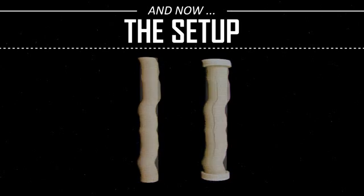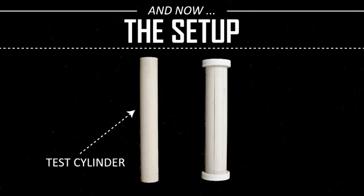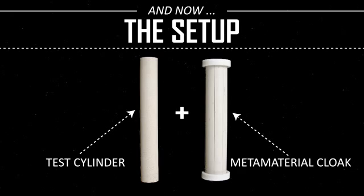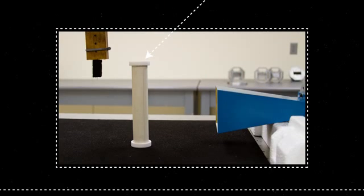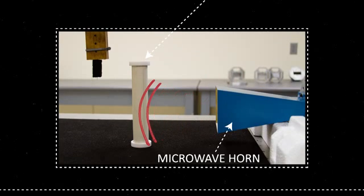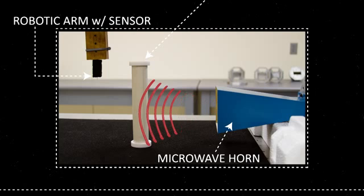The concept is straightforward. A test cylinder made of homogeneous non-conductive material is placed in a container made of metamaterial specifically designed to fit around it. This is placed in front of a horn that illuminates the unit with microwaves. A robotic arm measures the scattered waves and then compares it to measurements taken without the cloak.